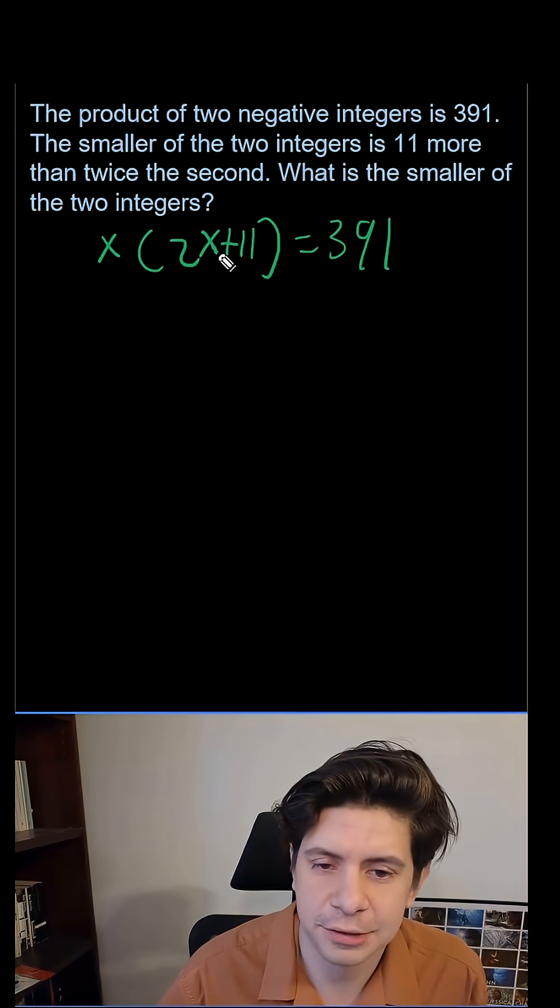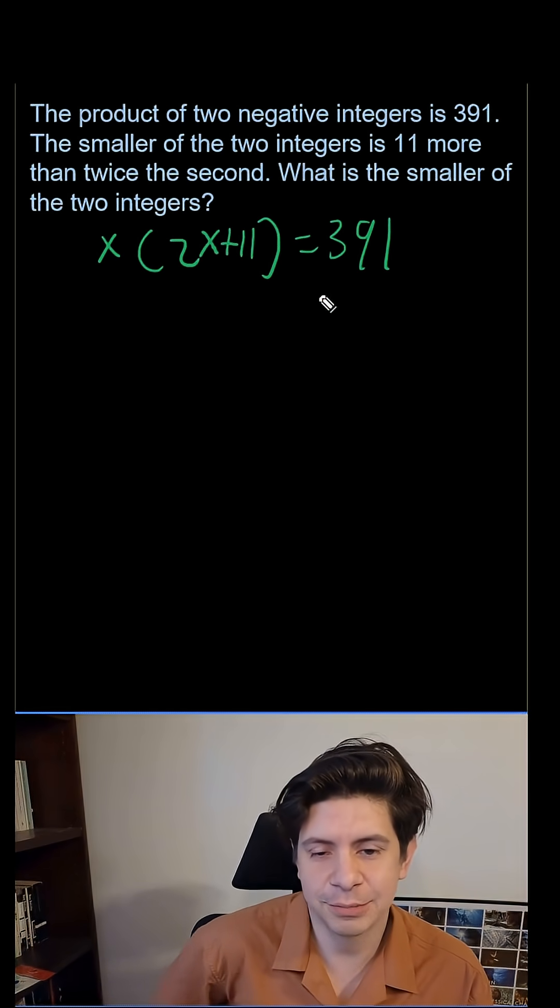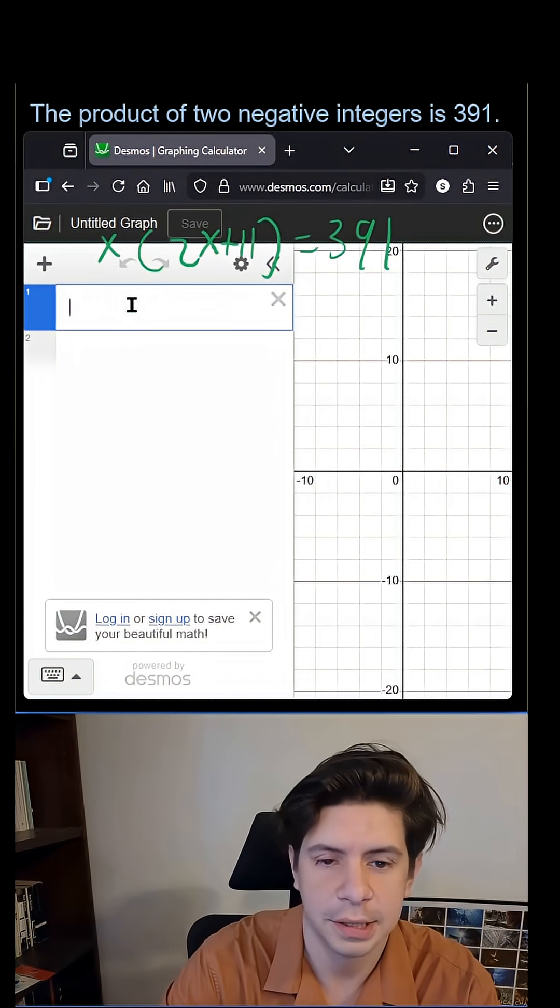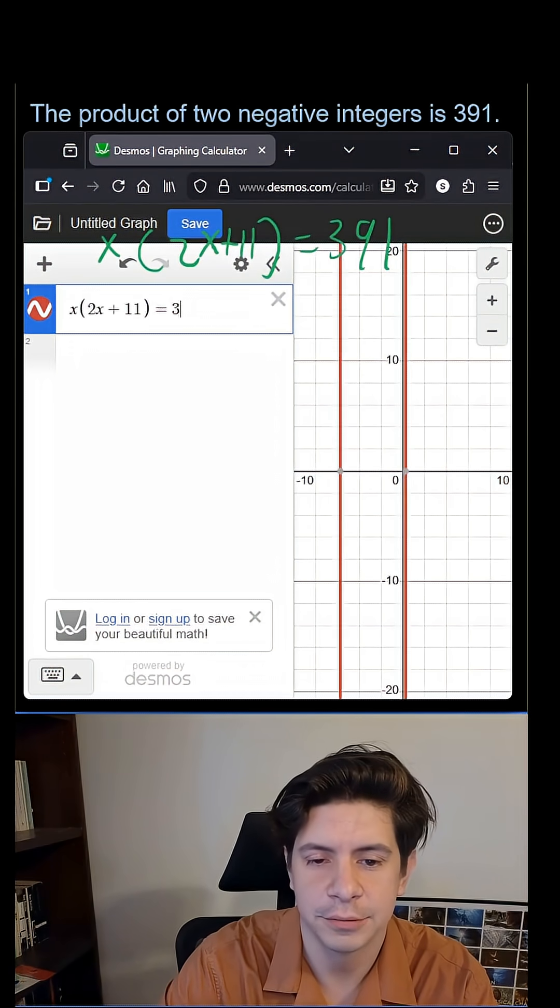Since this is for the SAT and you can use Desmos on the test, the other option is to just plug it in to Desmos and solve. You just put in x parentheses 2x plus 11 equals 391.